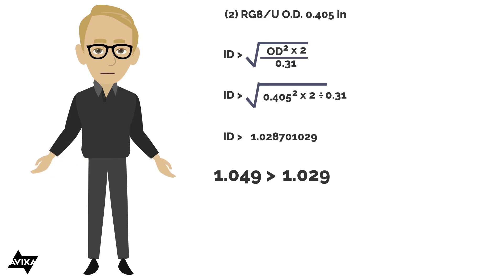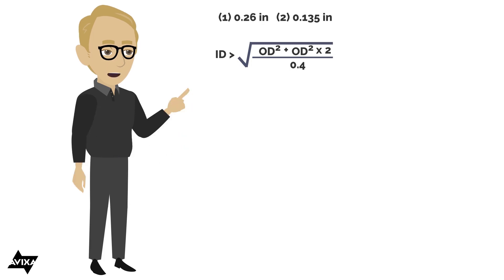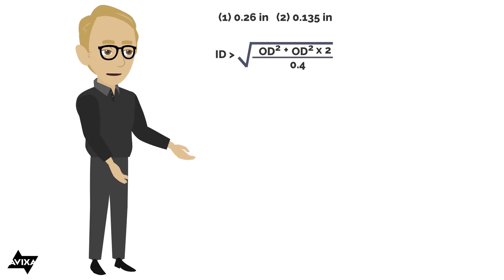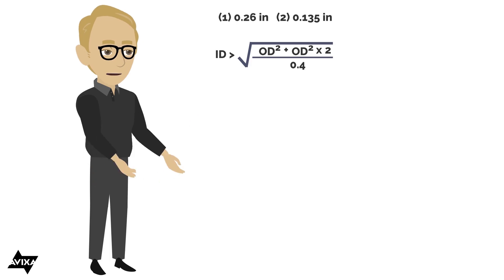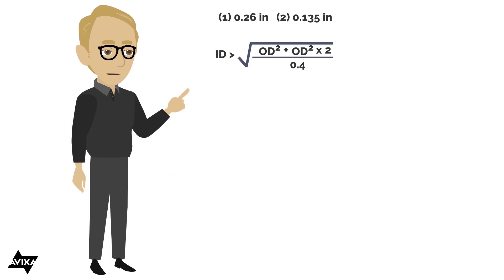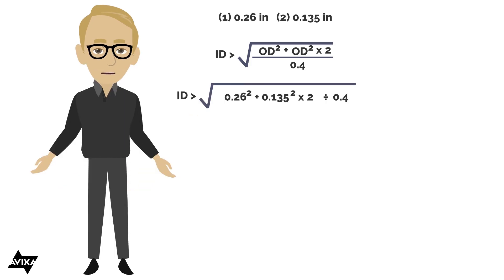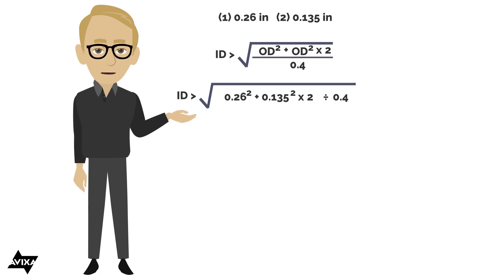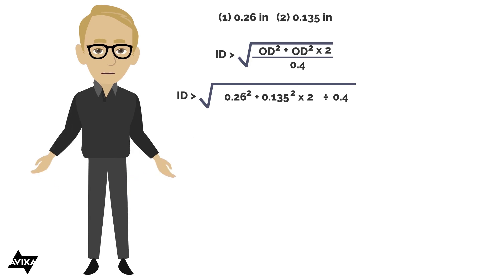Let's do one more. This time we're going to mix up the sizes: I'm going to pull one cable at 0.26 inches outer diameter, and two cables at 0.135 inches outer diameter. Since this is three or more, my fill percentage is 40%. The inner diameter must be larger than the square root of 0.26 squared plus 0.135 squared times two, all divided by 0.4.